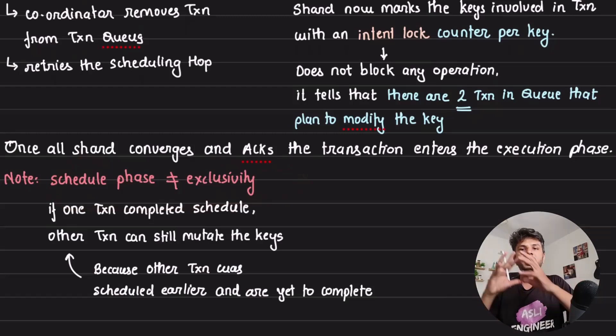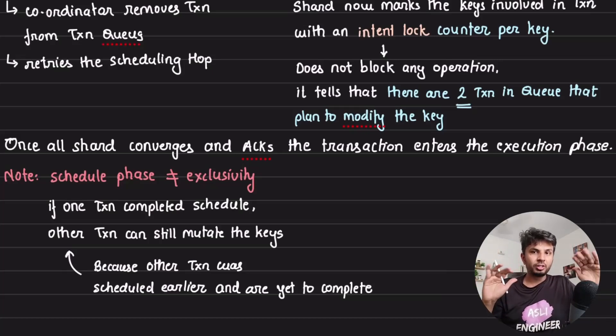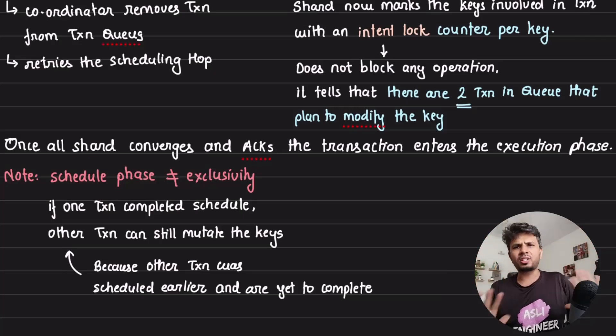Please make sure, please understand: the scheduling phase is not equal to exclusivity. It just means that hey, I'm interested in modifying this particular key. It is actually possible that if one transaction has completed the schedule phase, your other transaction can actually mutate the key. There is no one which is stopping it from happening because scheduling does not mean exclusivity. There is no exclusive lock that is taken on that key. It is possible for other transaction requests to come in because that other transaction has also completed the schedule but not completed the execution phase. Which means that schedule is not equal to exclusivity. They're just showing the intent that hey, I want to modify this key and please enqueue my transaction in your queue and arrange it in a way that maintains serializability.